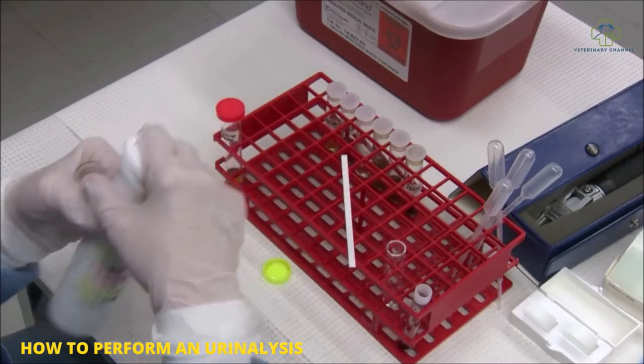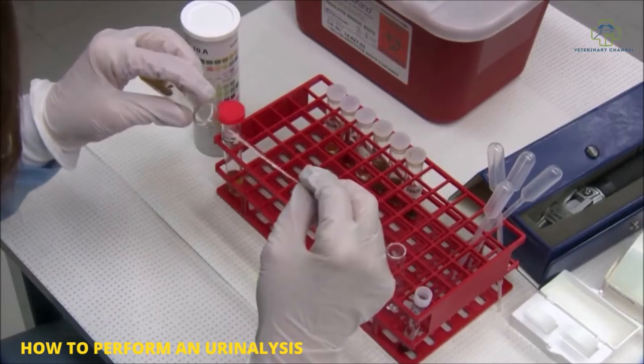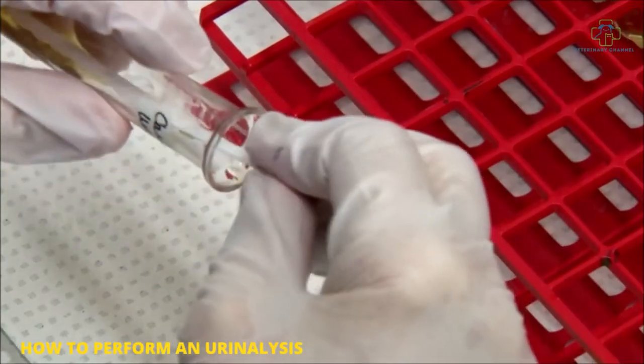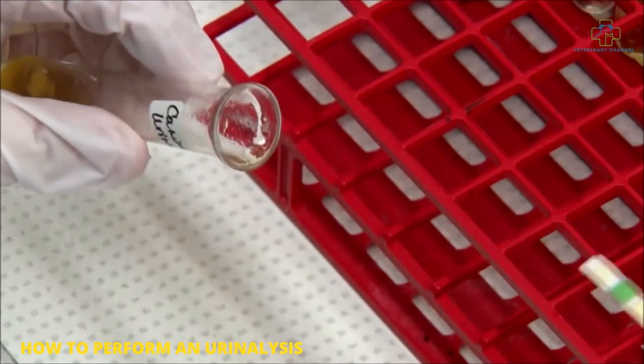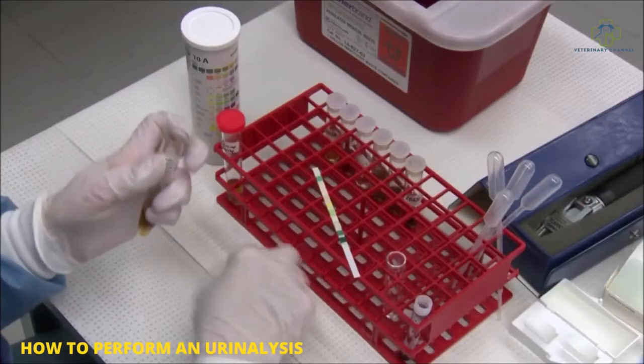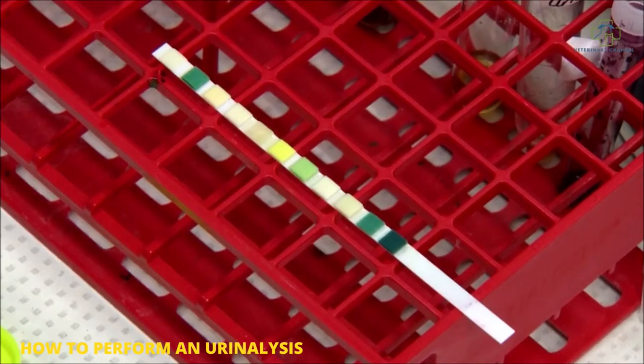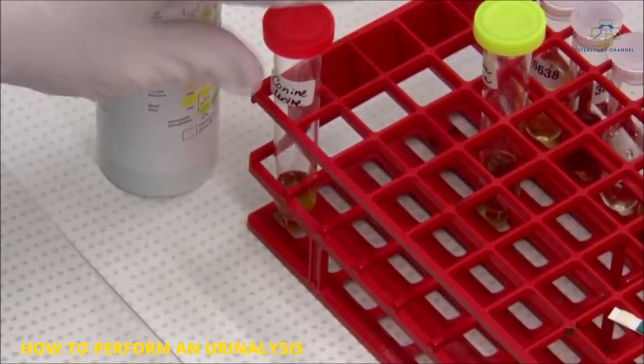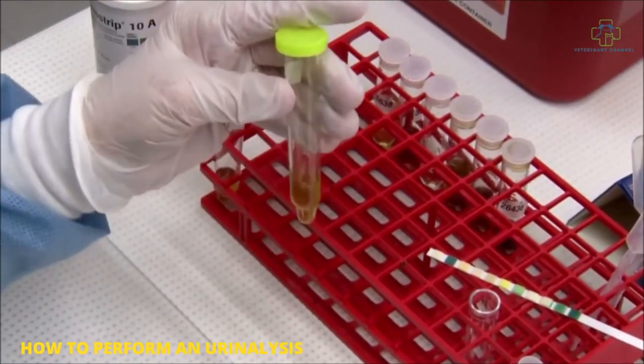Tip your urine forward, let it run up the length of the strip, and tilt it back. It's a quick one second dip. Then you want to let your strip sit for 60 seconds, and after 60 seconds you can read all of your results. When you're doing your urinalysis, you want to note your color and clarity.